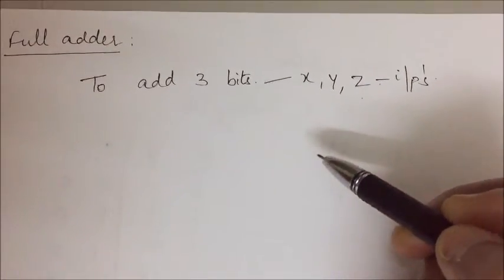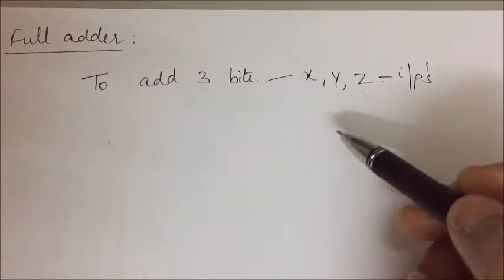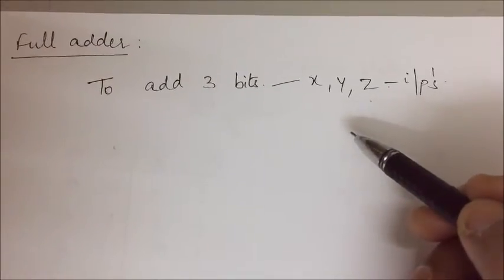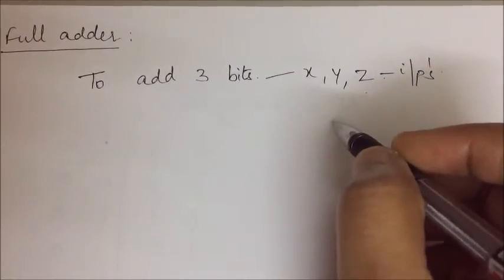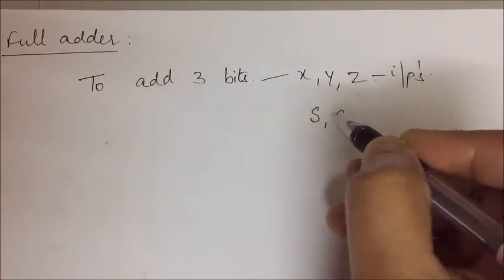If we consider all 3 as 1s, 1 plus 1 plus 1 equals 3. 3 in binary representation is 11. So at the max, we will get 2 outputs. So we represent them as sum and carry.